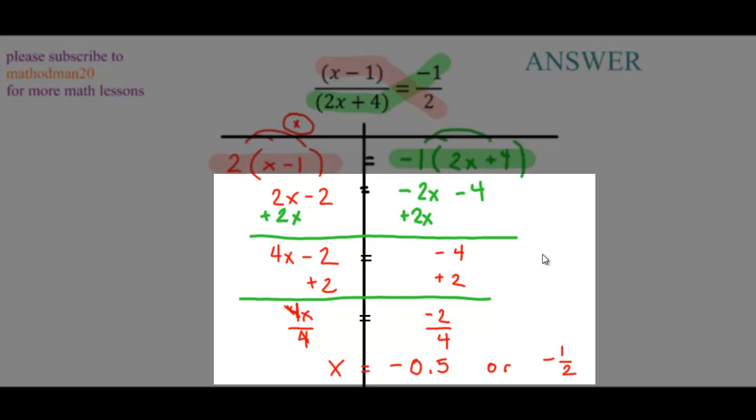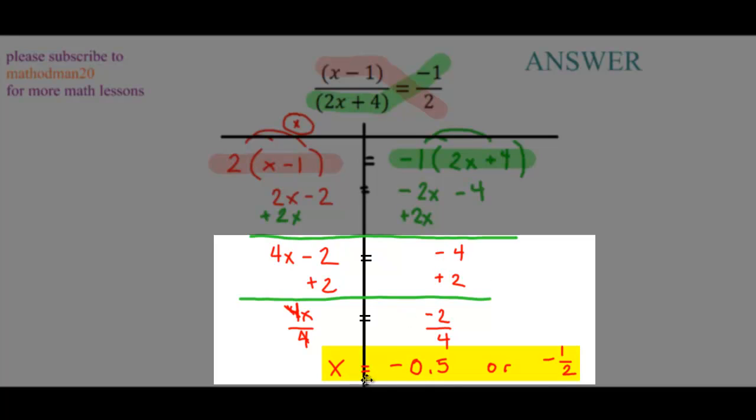Negative 4 drops down. From this point on, it's just a two-step equation. In the end, you get x equals negative 0.5 or negative 1 half.